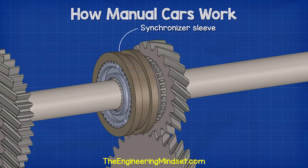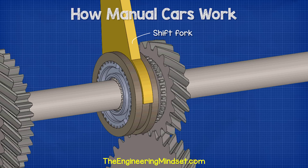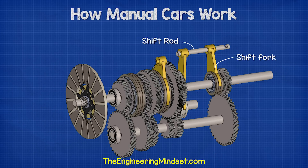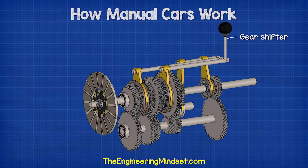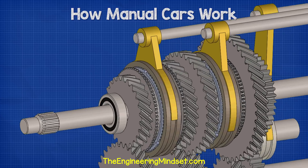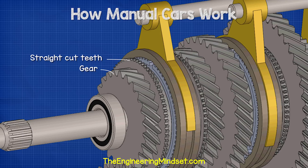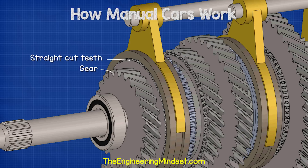Attached to the channel on the outside of each of the sleeves is a shift fork and a shift rod. The rod connects to the gear shifter. The gear shifter moves the rod backwards and forwards, which therefore also moves the fork and sleeve backwards and forwards. On each of the output gears, we find some additional straight-cut teeth. These teeth will align with the spline teeth inside the sleeve. When the gear is selected, the teeth inside the sleeve align and interlock with the straight-cut teeth on the gear. The gear will now be interlocked with the sleeve and the output shaft.